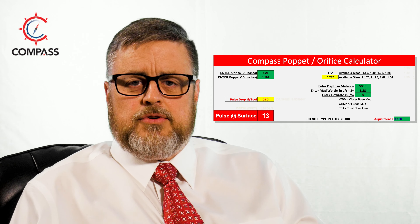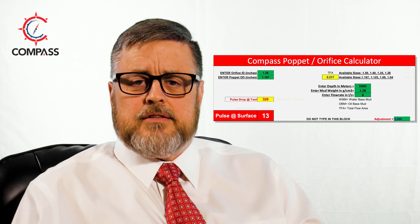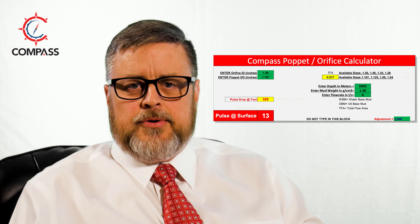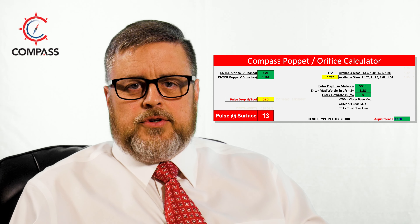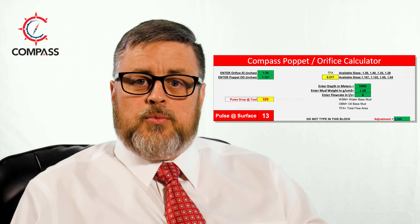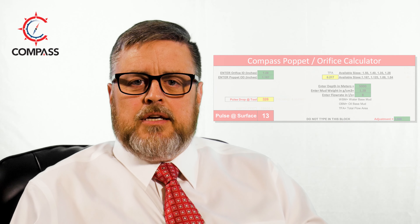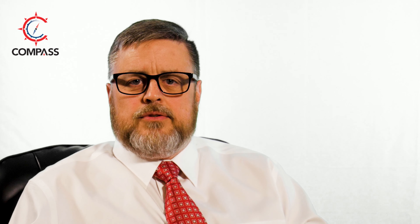Compass provides a pop-out and orifice calculator that helps you select the appropriate pop-out and orifice in order to generate that 50 pound pulse at the bottom of the next drilling interval. Looking at this screen, it gives you the pulse of the tool as well as the expected pulse at surface. The calculator allows a mud engineer or MWD engineer to select the appropriate pop-out tip and orifice for the next drilling interval, and to overcome any noise on the system. Configuring for pulses above 100 psi is generally considered overkill and can lead to problems in decoding.